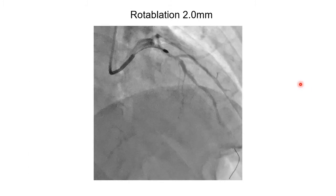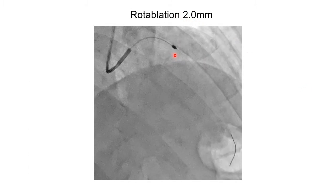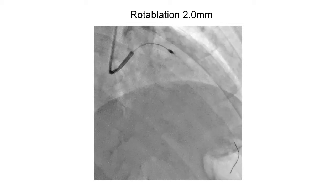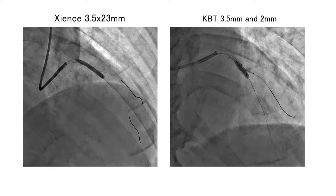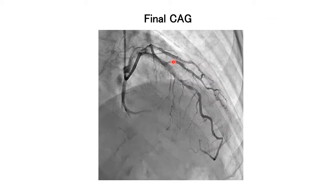We performed rotablation using a 2.0 mm burr. Then a Xience stent 3.5x23 was implanted into the LAD and finished with KBT using 3.5 and 2 mm burrs. Final angiogram shows a beautiful result.